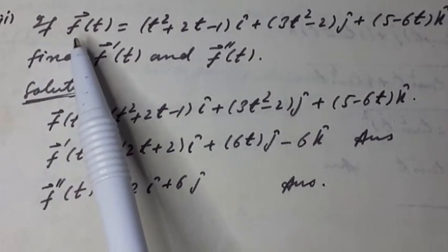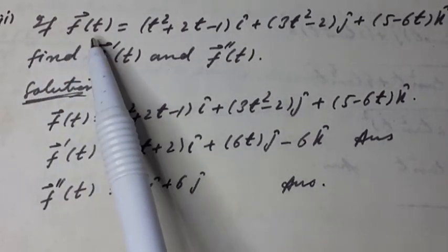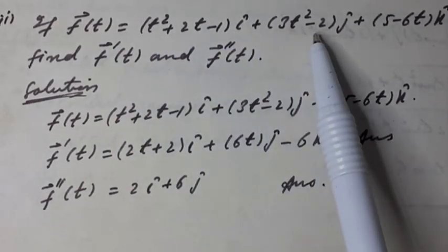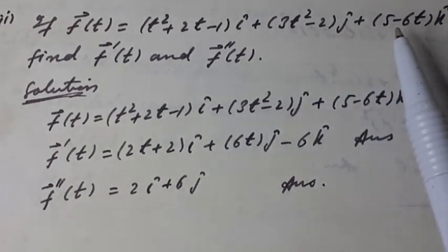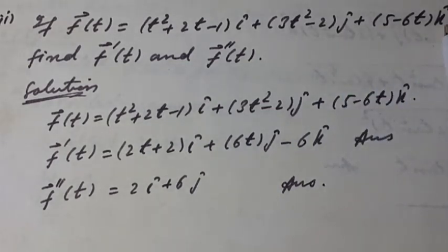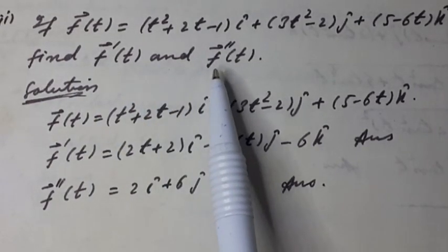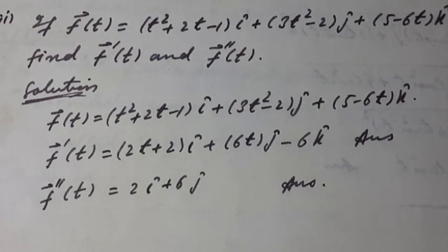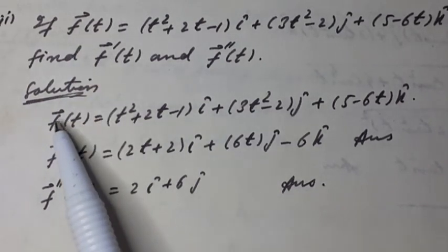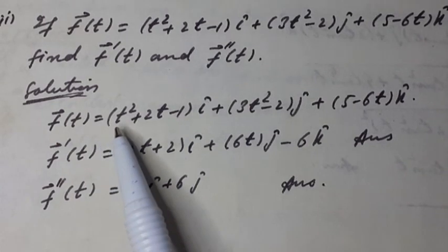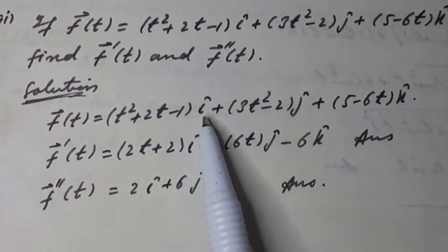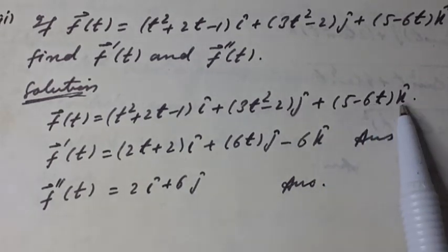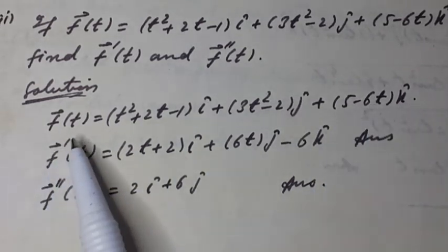Second part: vector function f(t) = (t² + 2t − 1) î + (3t² − 2) ĵ + (5 − 6t) k̂. Find the first derivative and second derivative of the given vector function of scalar variable t. Solution: the given vector function is f(t) = (t² + 2t − 1) î + (3t² − 2) ĵ + (5 − 6t) k̂.